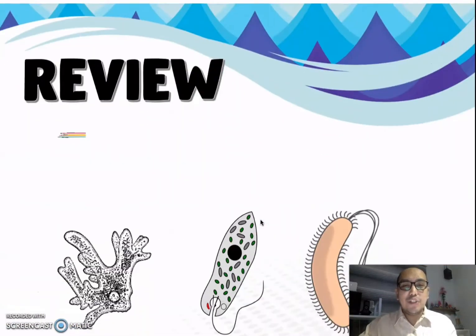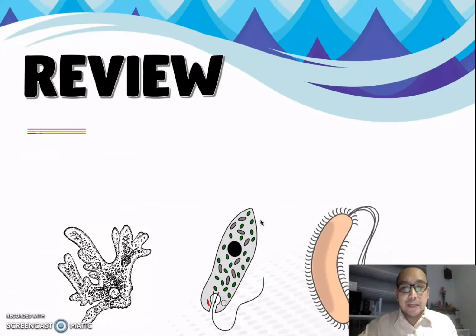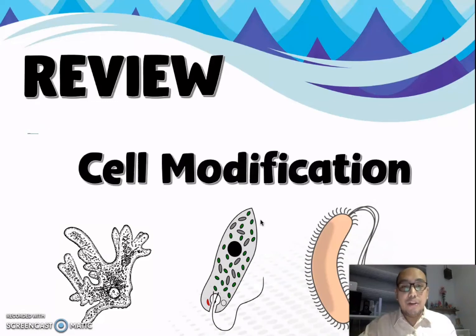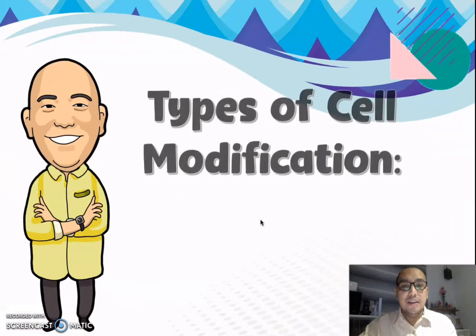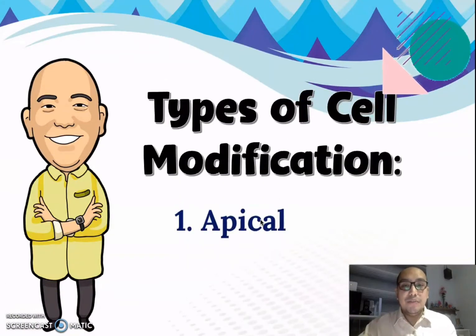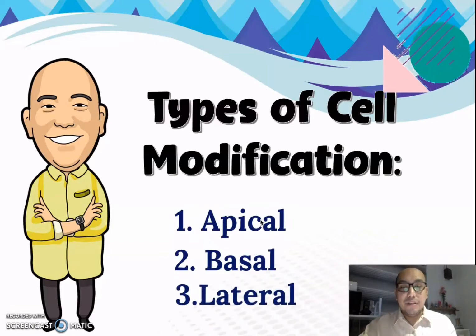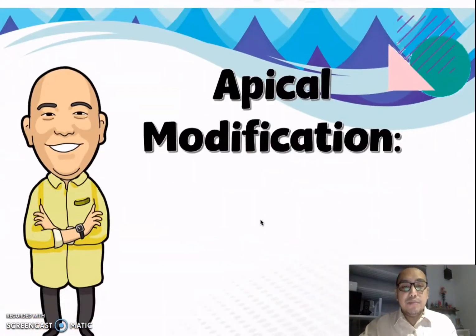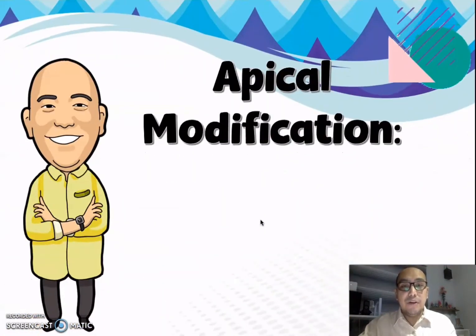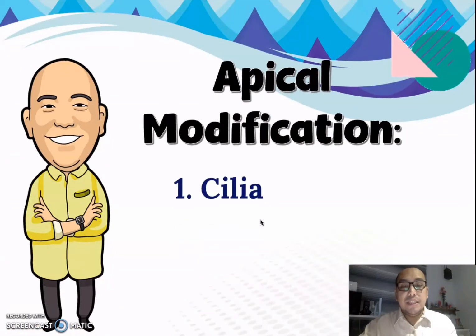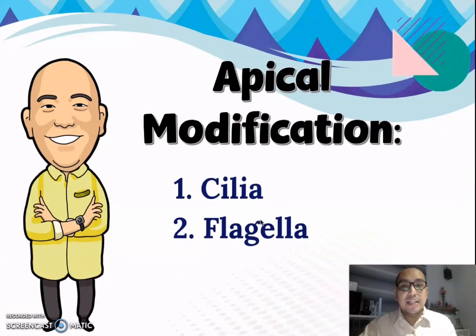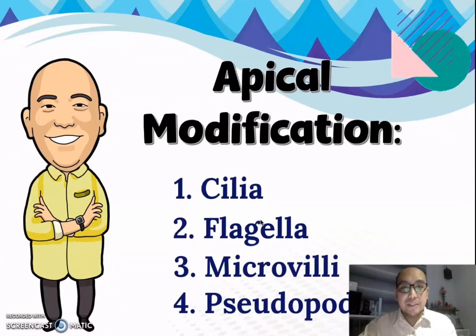Let's have a short recap of our previous topic regarding cell modification. We talked about the different types: the apical modification, the basal modification, and the lateral modification. The apical modification is subdivided into four: the cilia, the flagella, the microvilli, and the pseudopods.